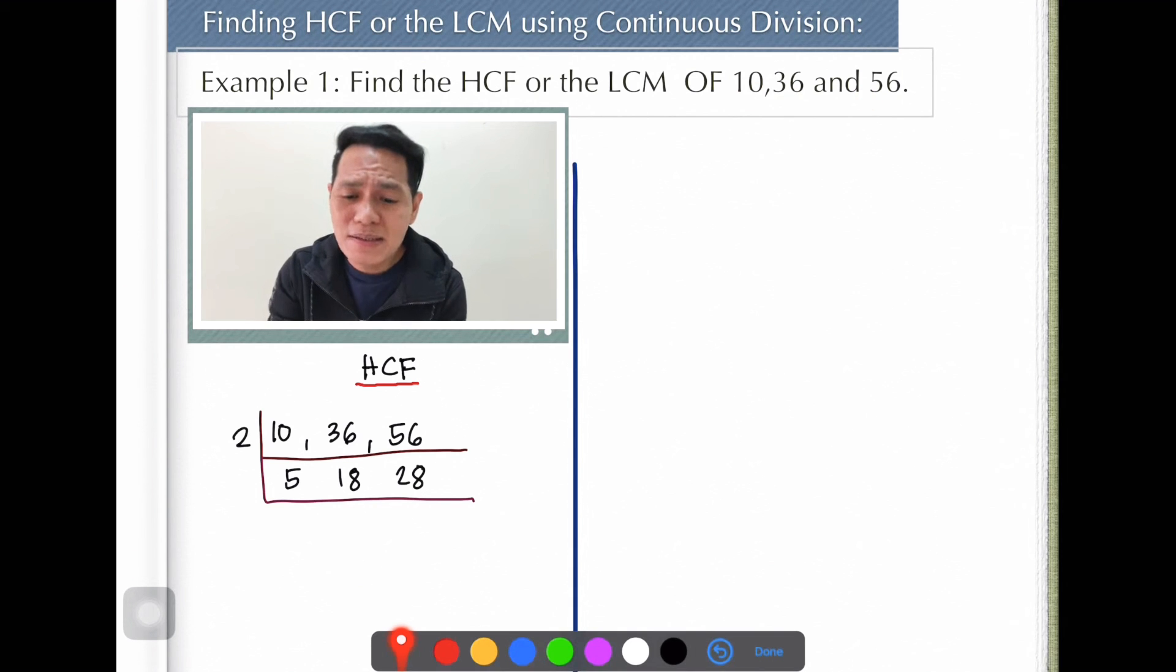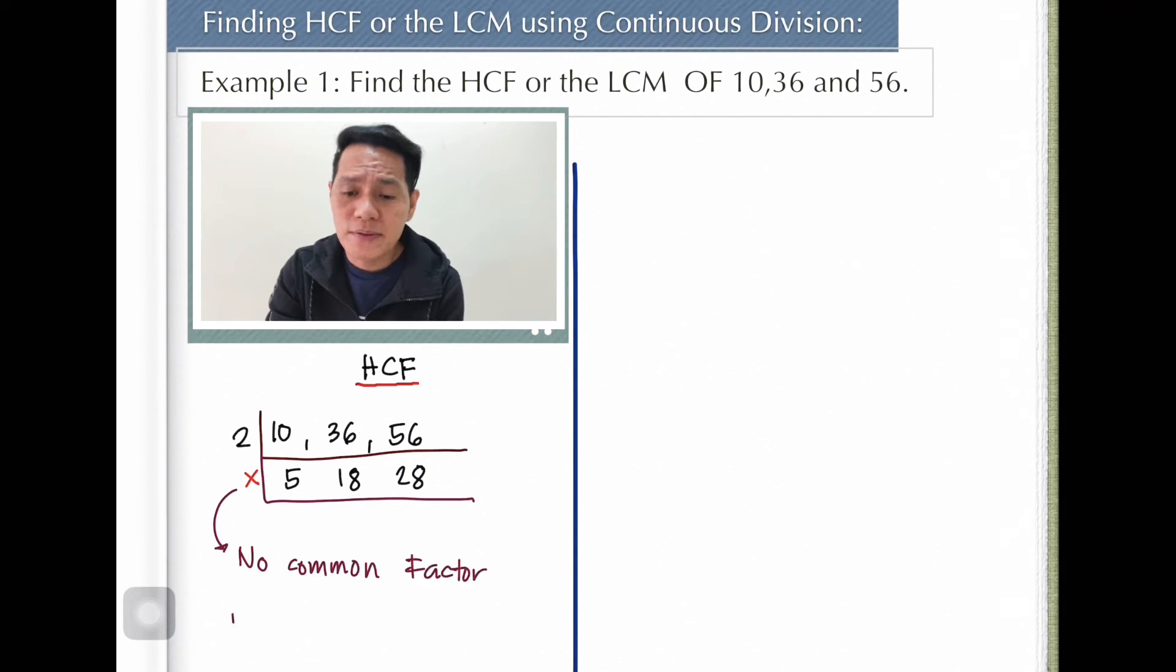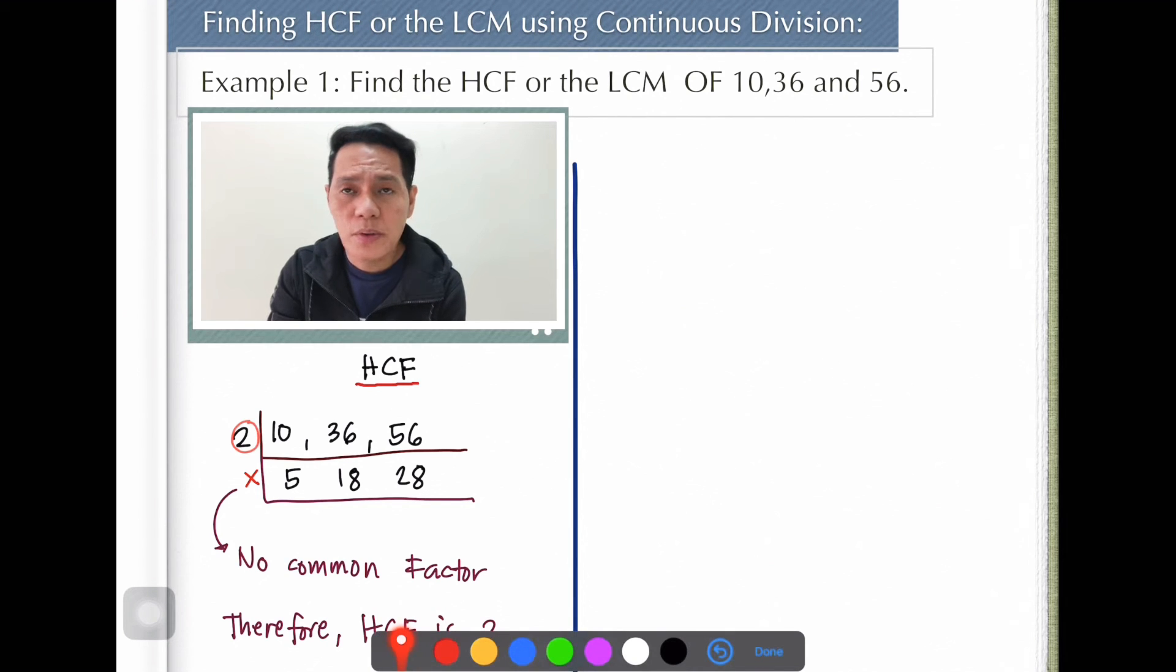So in that case, since there is no more common among the three numbers, then our HCF - there's no common factor. So in other words, our HCF is 2. So that is our highest common factor. Okay guys, next one.